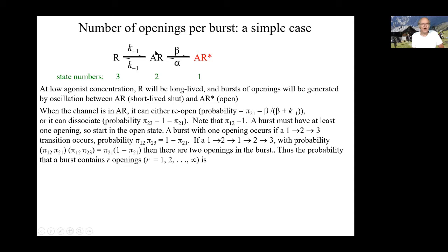Let's start in the intermediate state. The rate constant for leaving it is beta for opening of the channel, and k-minus-1 for dissociation. The probability that it will reopen rather than dissociate is beta over beta plus k-minus-1. Likewise, the probability that it dissociates rather than opening is k-minus-1 over beta plus k-minus-1. These two probabilities must add up to one because it must either open or dissociate — those are the only possibilities.